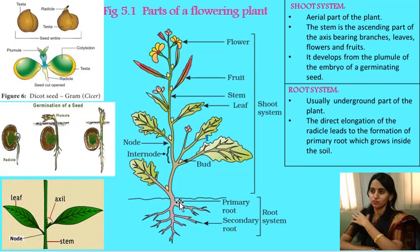The root system consists of the main root and lateral branches. Remember, the root system is usually the underground part of the plant. The root consists of the main root called the primary root and branches — lateral branches which include secondary roots and tertiary roots. The primary root along with its branches constitutes the root system.